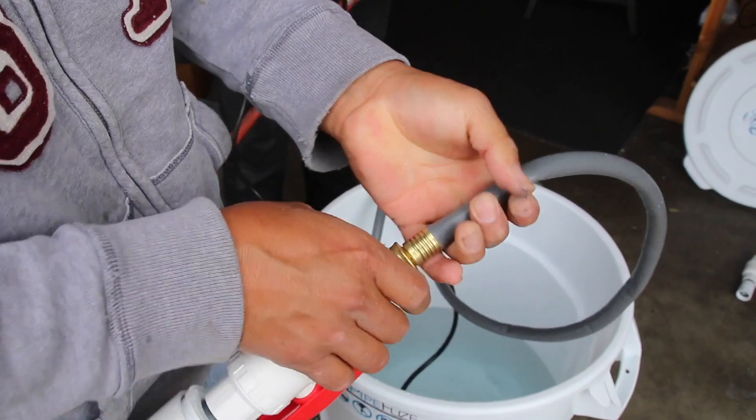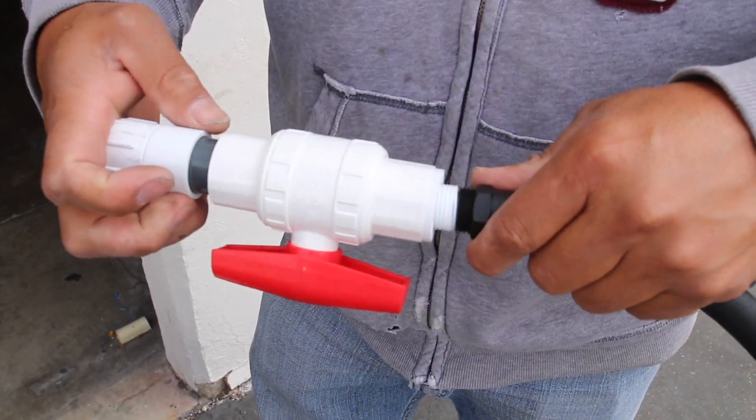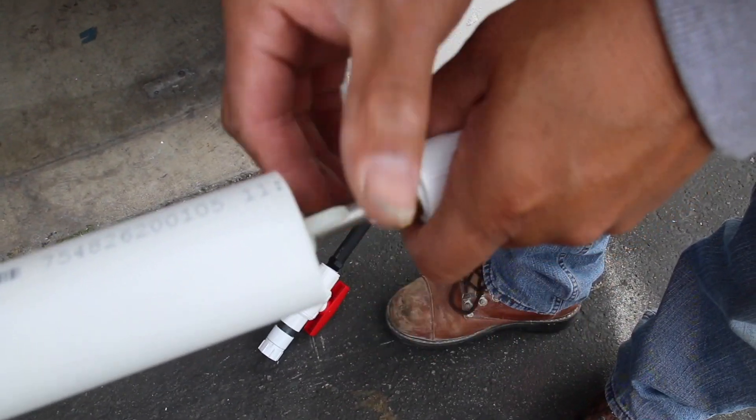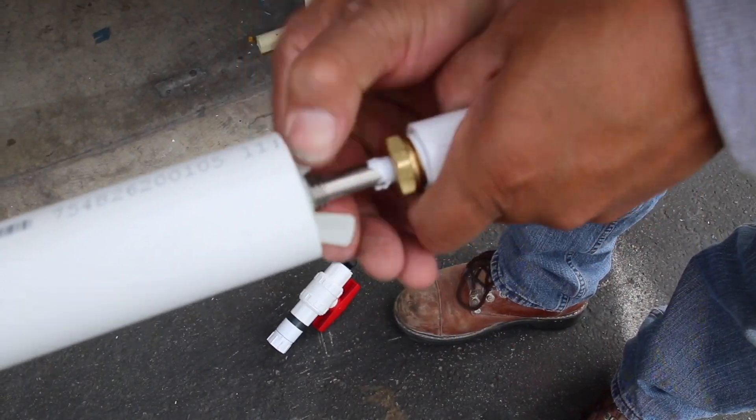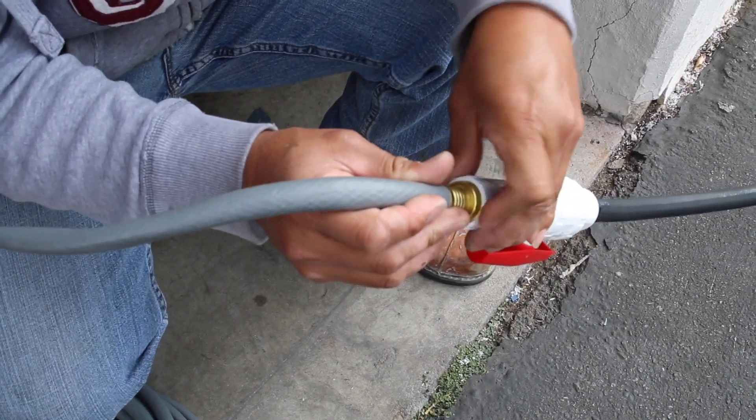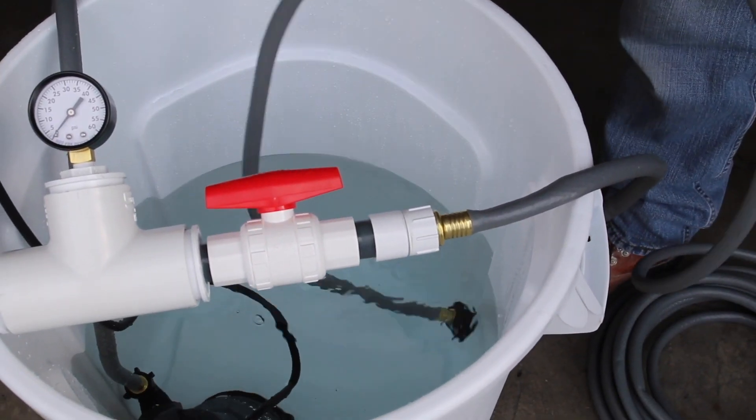Next thing we do is work on our return side. Our return fitting, we screw the hose in, we set in our injection plug that's going to take the water back out of the pipe, we hook it back up to another hose, the secondary hose in the kit, and bring it back to the tank.